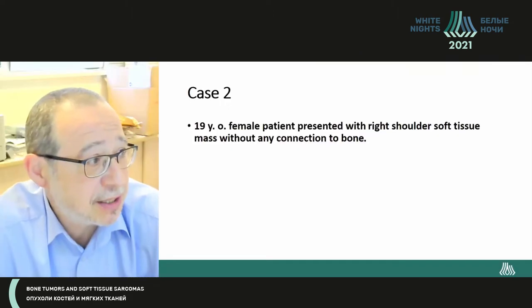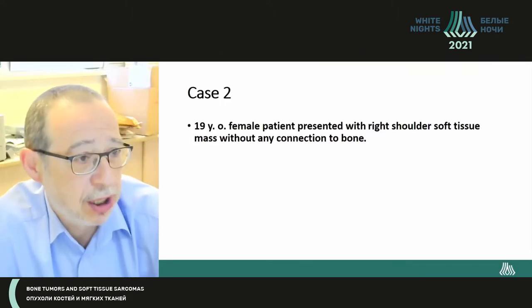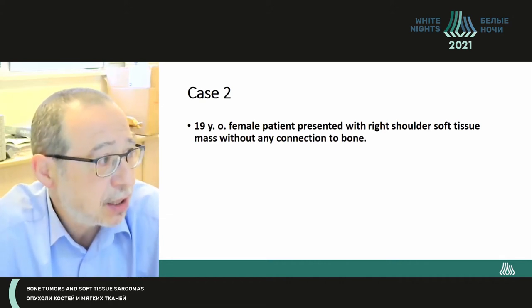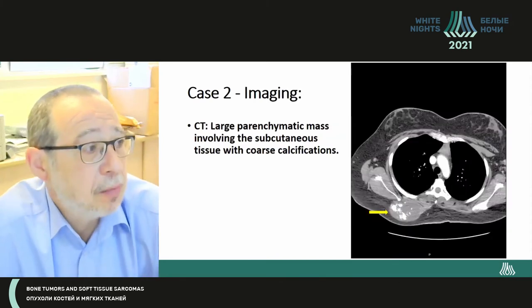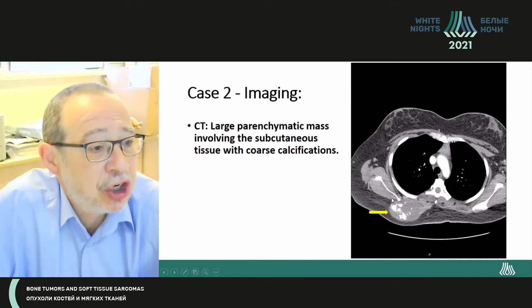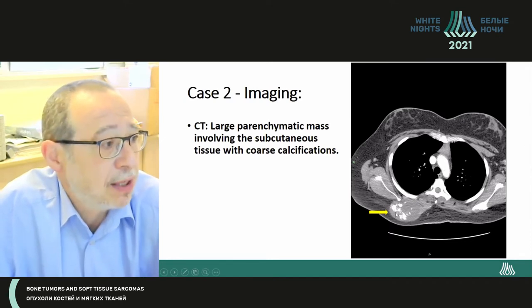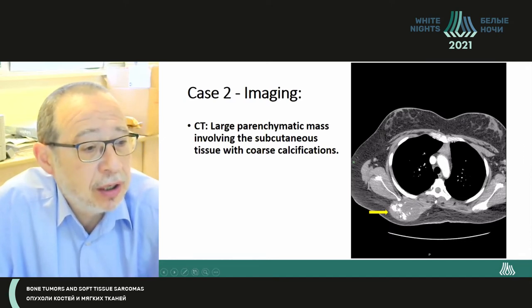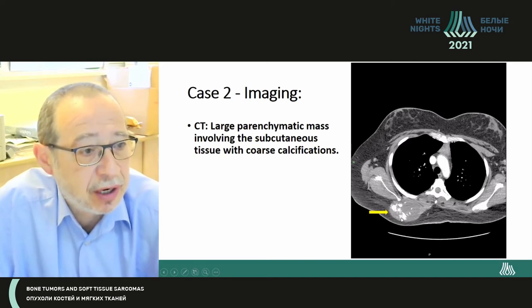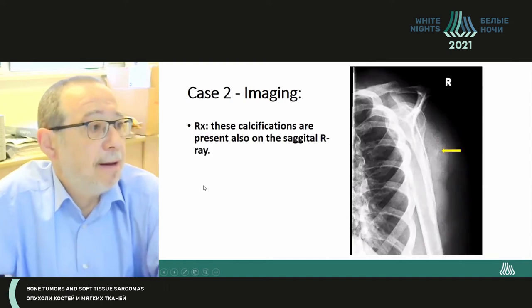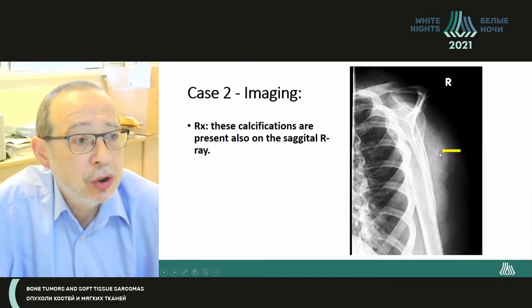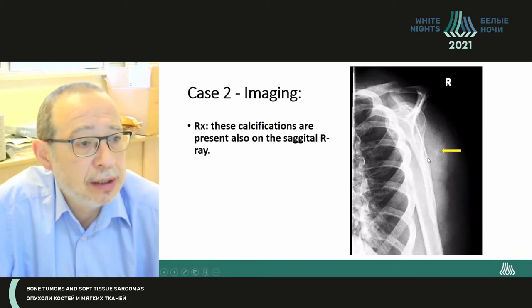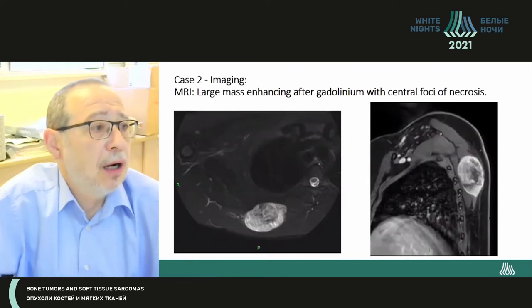The second case is a similar location — also a shoulder mass, but in a 19-year-old female. On CT imaging, we can see a large soft tissue mass with very coarse, heavy calcifications. The sagittal X-ray imaging shows the same — you can see those calcifications clearly.